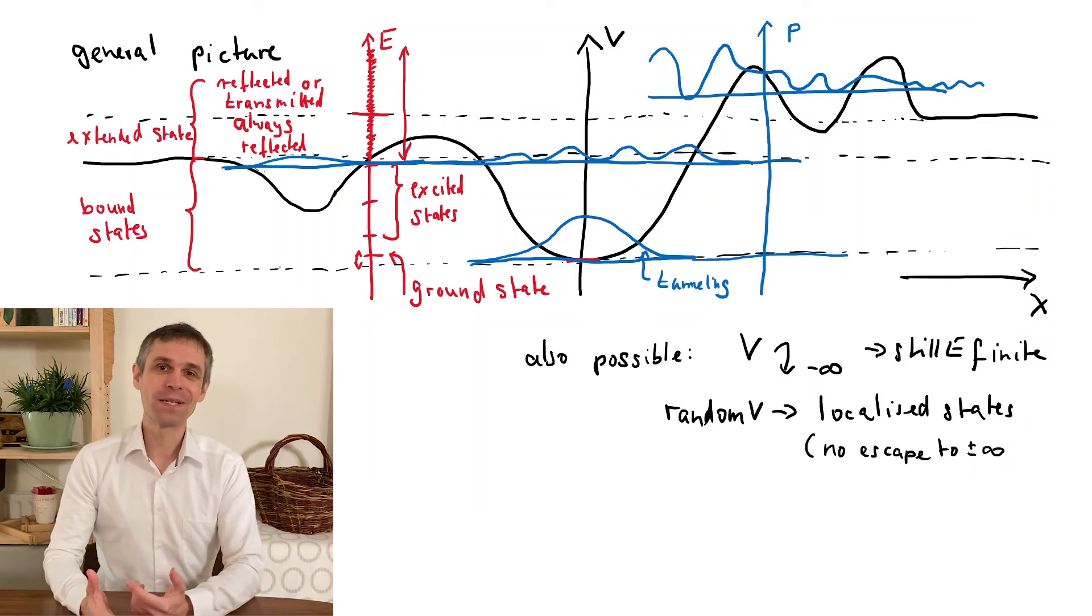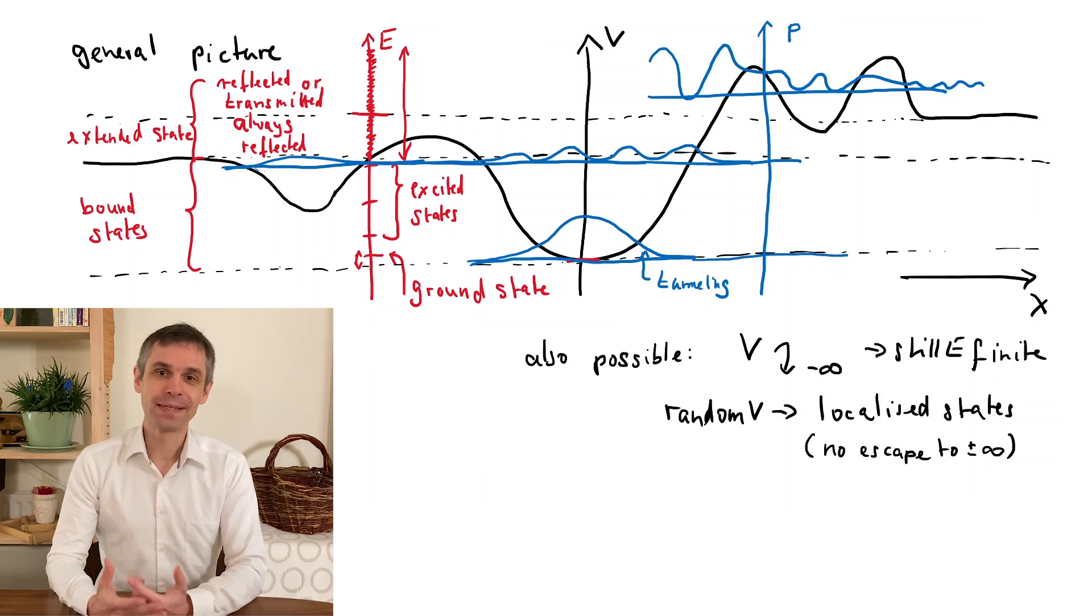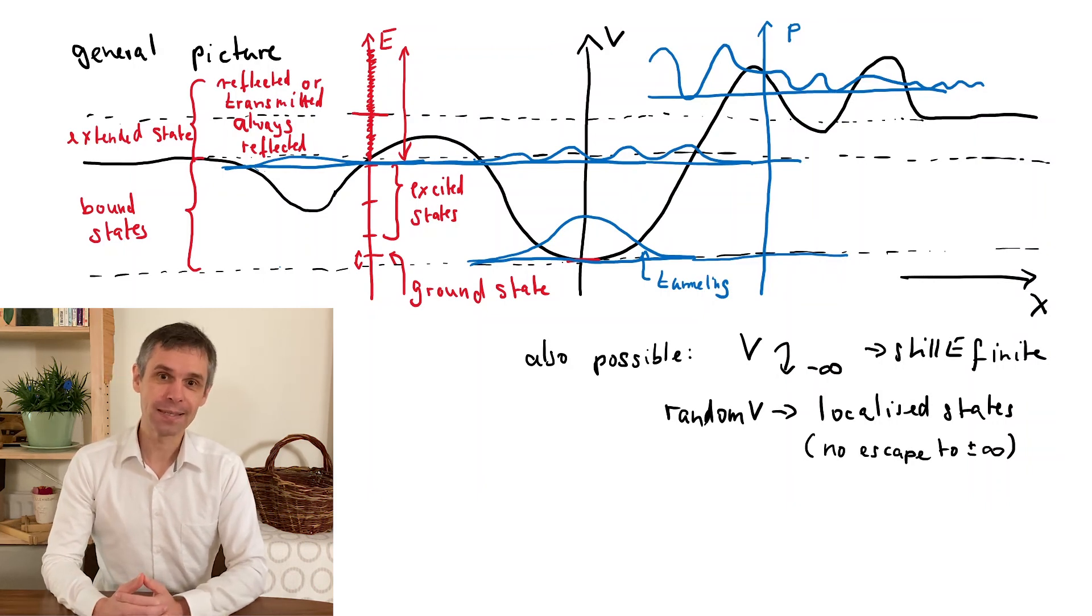So in some ways, this is the opposite of tunneling. The mathematics of these states is actually a little bit more complicated than what we do in this course. The phenomenon was discovered in 1958 by Phil Anderson and he won the Nobel Prize for it in 1977.